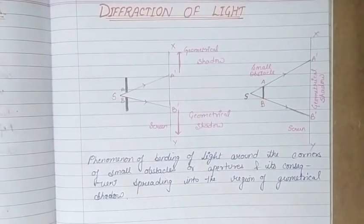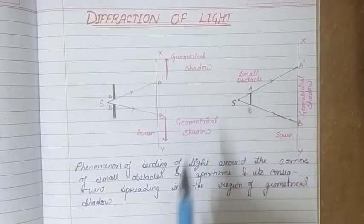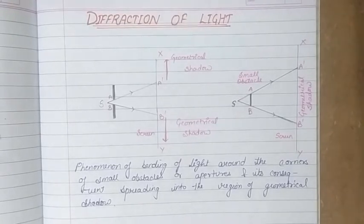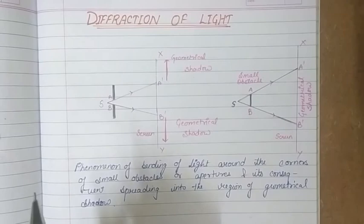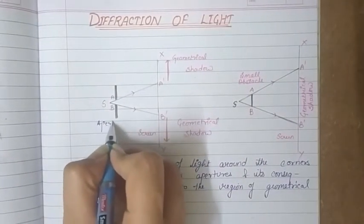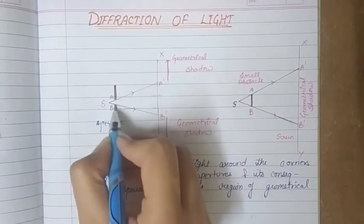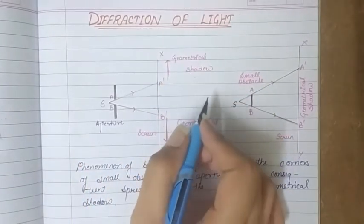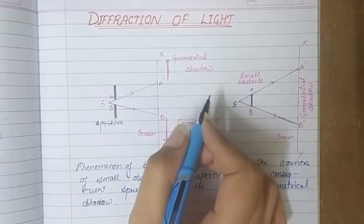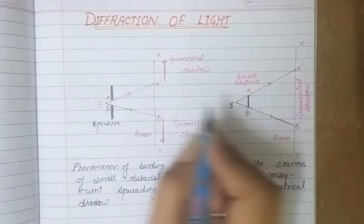We can see in the diagram that because of this small obstacle, the light bends and spreads into the region of its geometrical shadow — this phenomena is called diffraction of light. The first diagram shows the case of an aperture: if we see, the light should go straight, but because of this aperture it bends and enters the region of geometrical shadow. This is called diffraction of light due to an aperture.